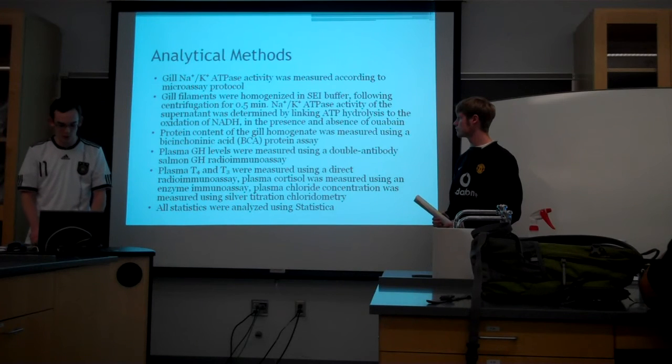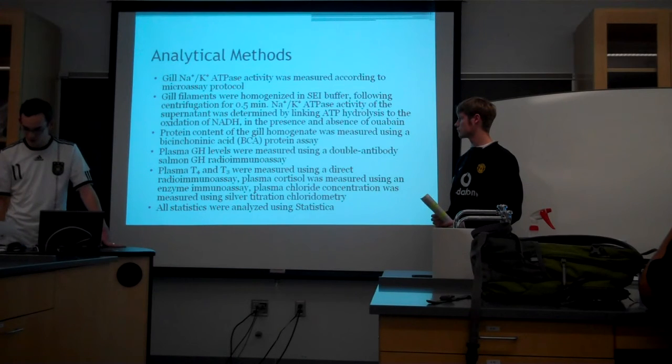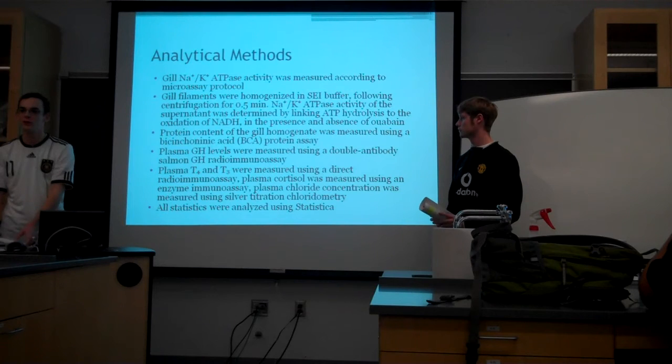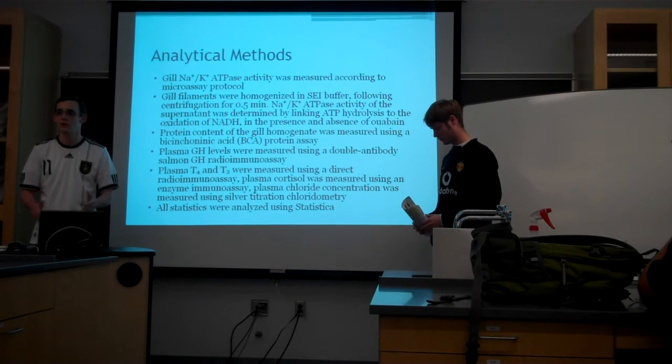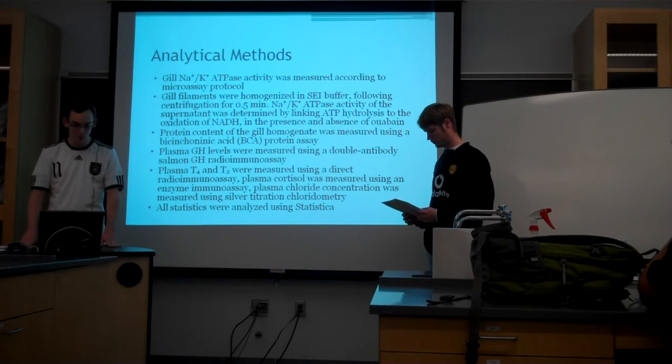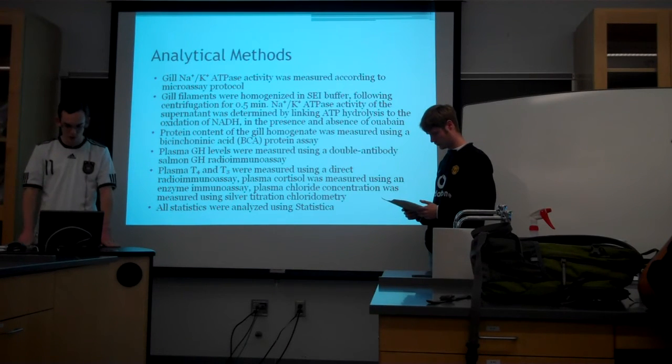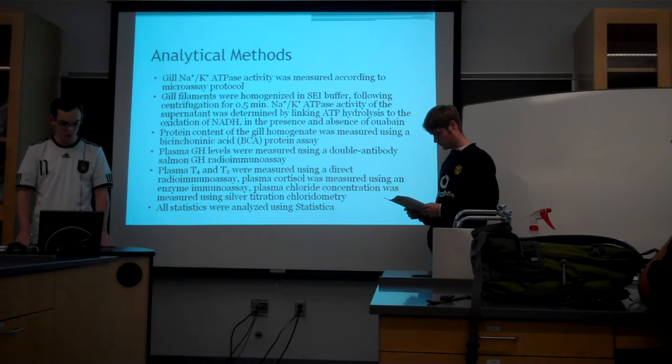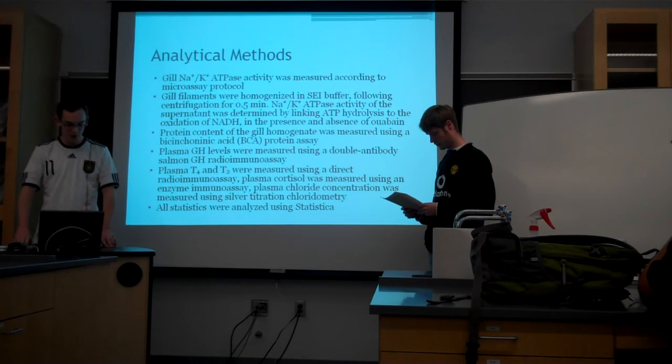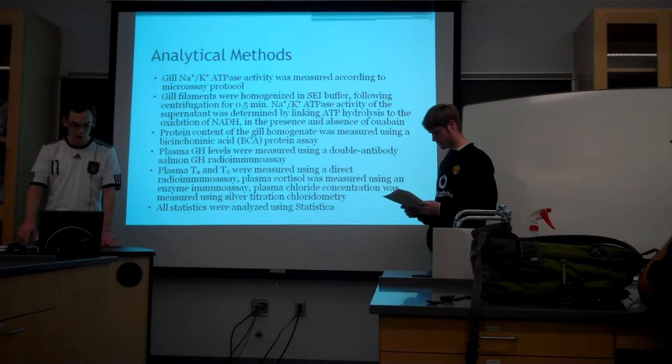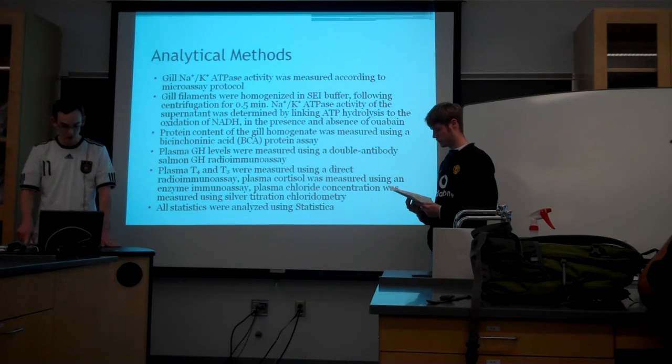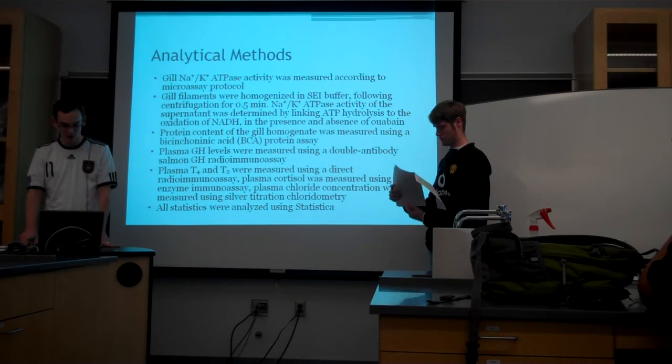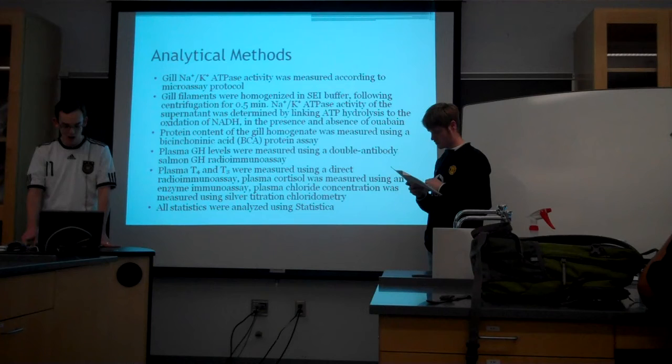Protein content of the gill homogenate was measured using bicinchoninic acid protein assay, which, for the people that are in biochem, it's similar to the Bradford reagent that we used. It measures protein concentration in accordance to color change, and you can graph that against a standard curve. Plasma growth hormone levels were measured using a double antibody salmon GH radioimmunoassay. Plasma thyroid T4 and T3 were measured using direct radioimmunoassay, and plasma cortisol was measured using an enzyme immunoassay, and plasma chloride concentration was measured using silver titration chloridometry, which was really cool.